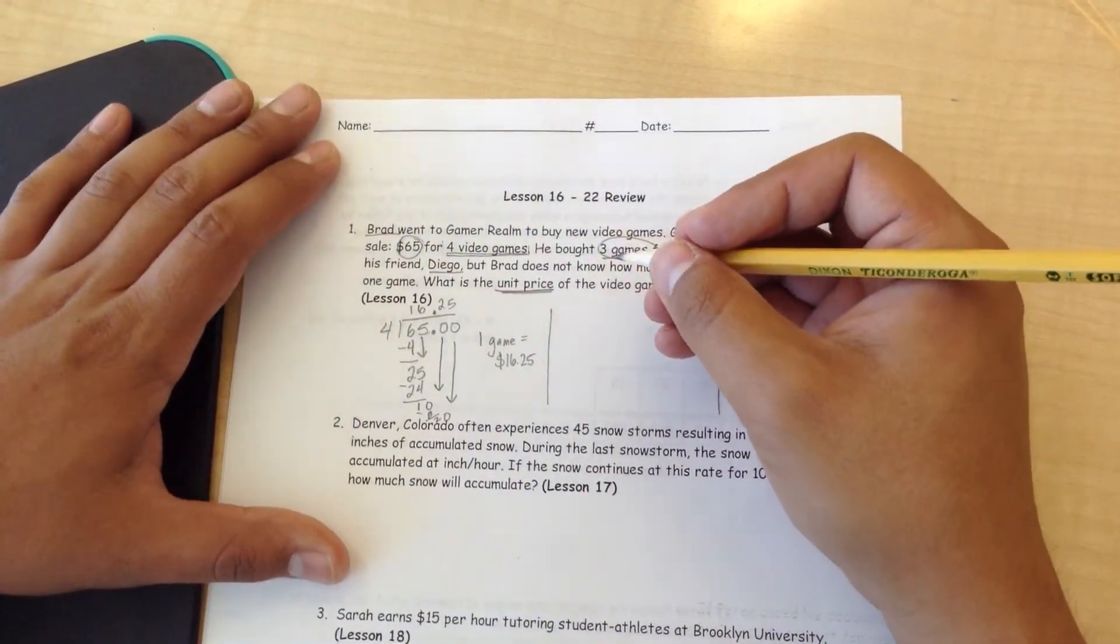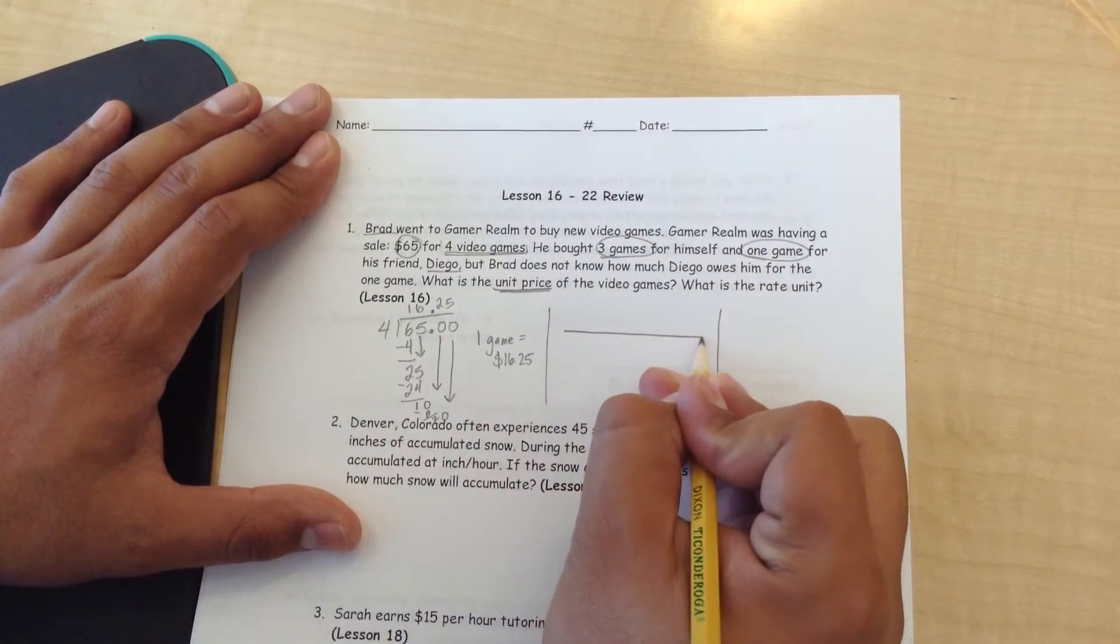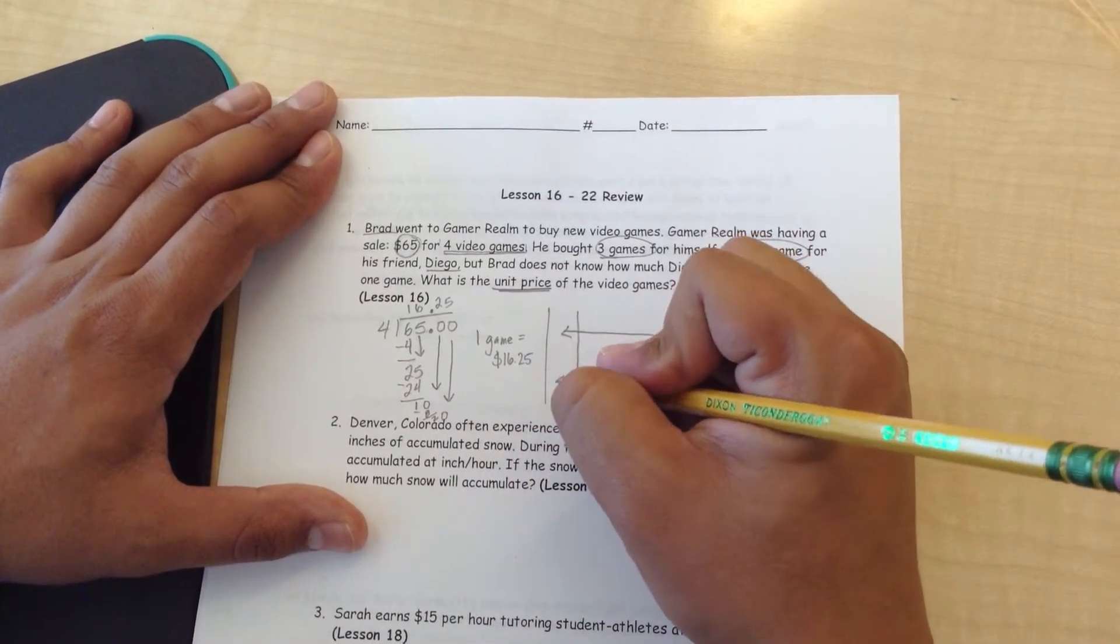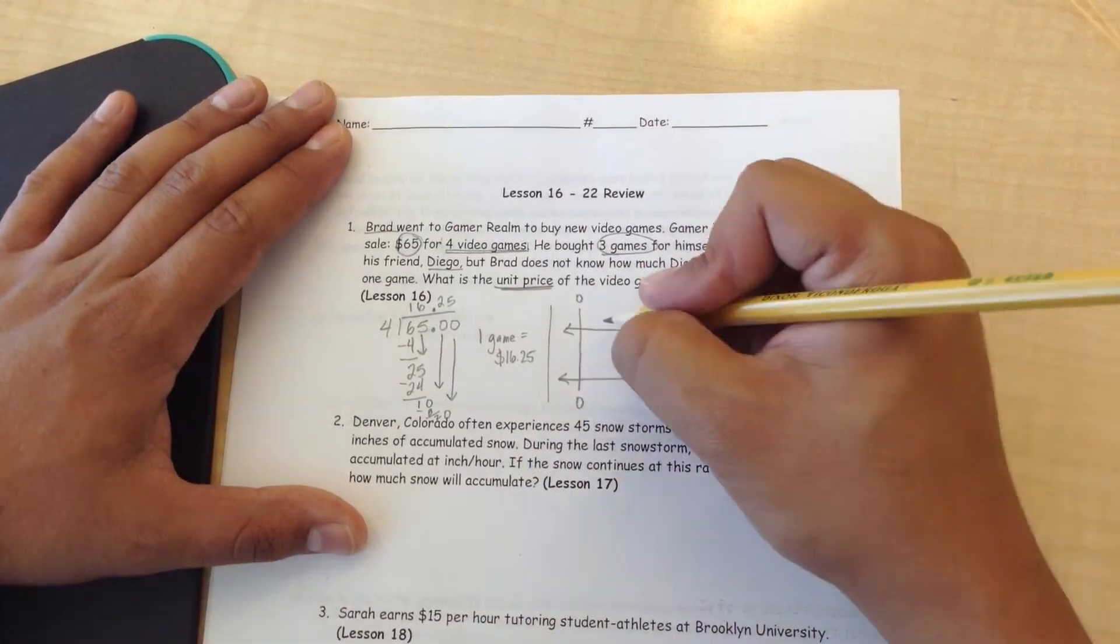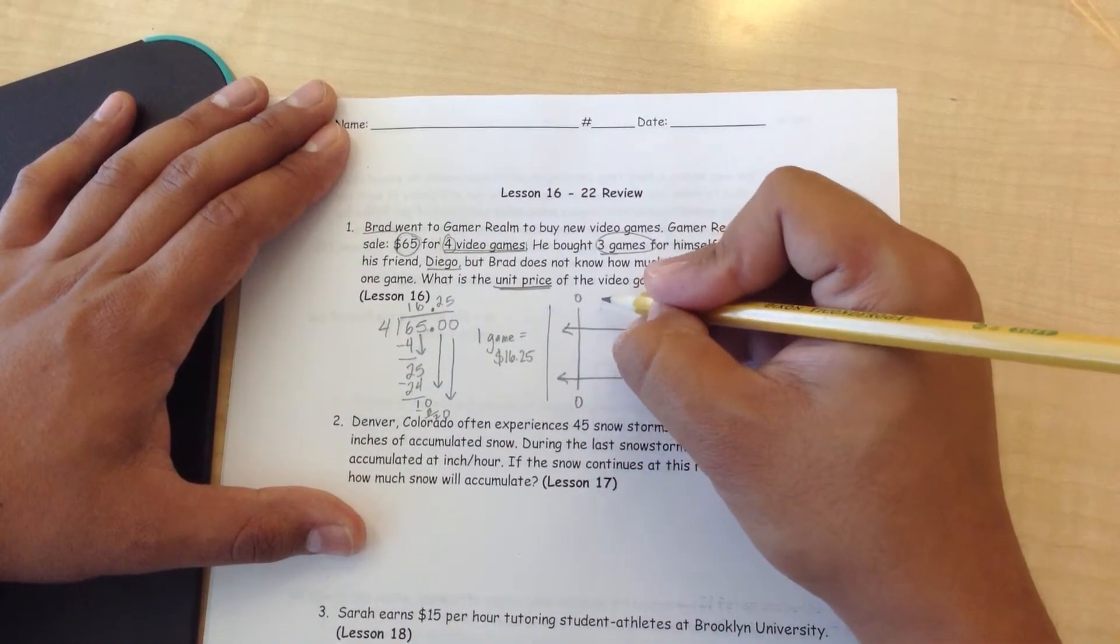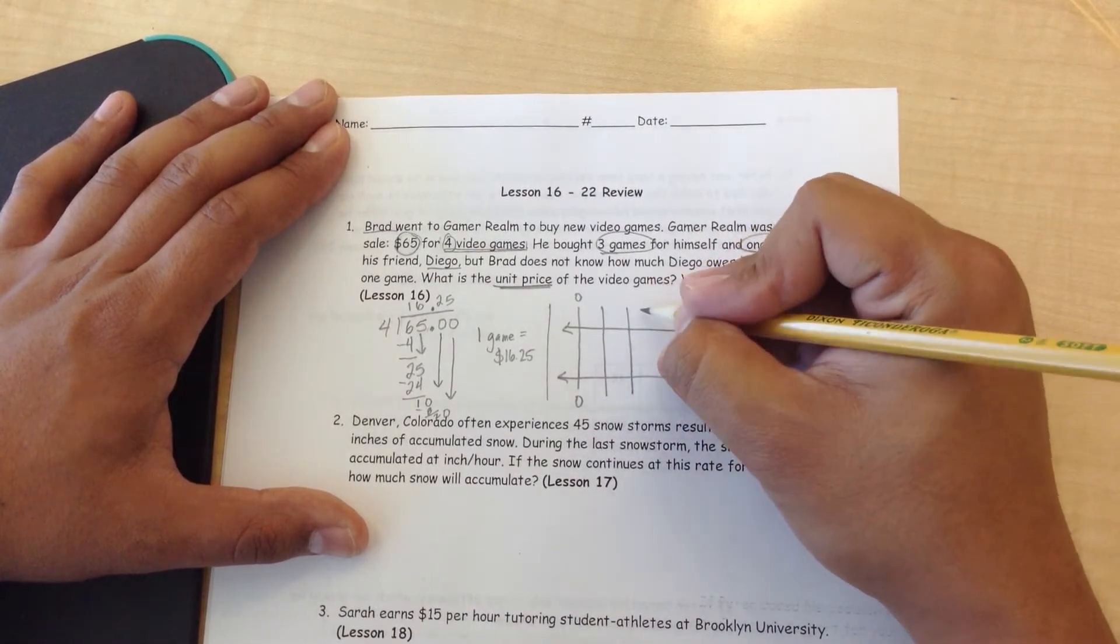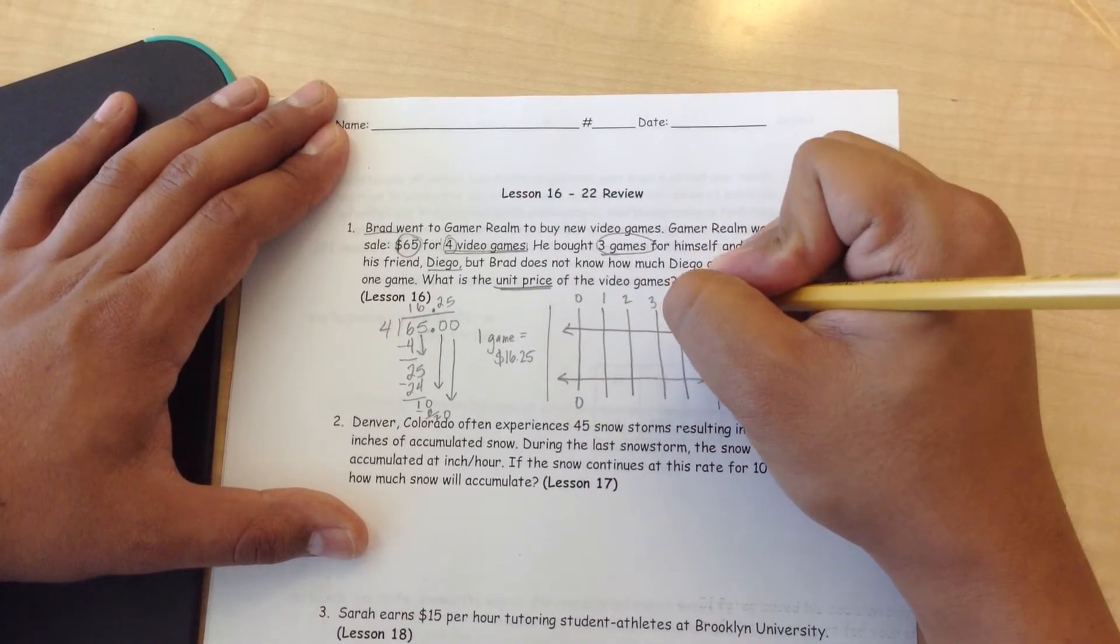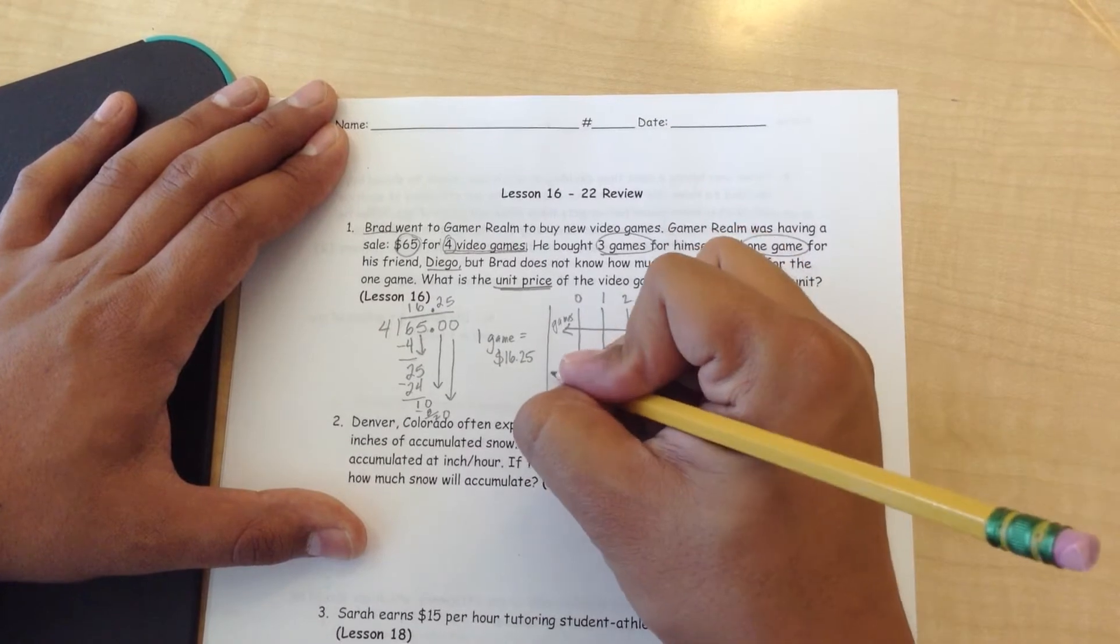However, if I need to display that in a model, what I would do is draw a double number line. Make sure I always add the zeros so I know I have a starting point. I'm working with how many games? Four games. So I'm going to make numbers one through four on the top, and make the top line represent games. The bottom is going to represent cost.